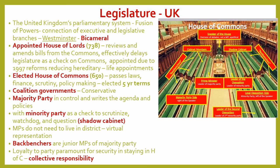The majority party is in control and writes the agenda, policies, and legislation for the UK's government. The minority party is a check — they scrutinize, they're the watchdog, they have question time, and they are part of what is known as the shadow cabinet. The majority party sits on one side, and the minority party and other opposition sit on the other. The shadow cabinet questions the cabinet members of the majority party, checking them.